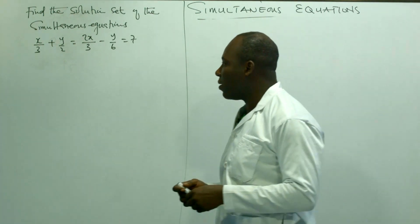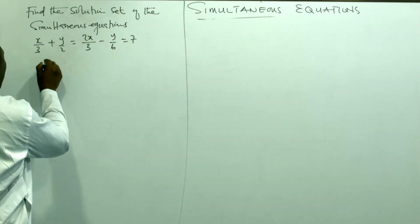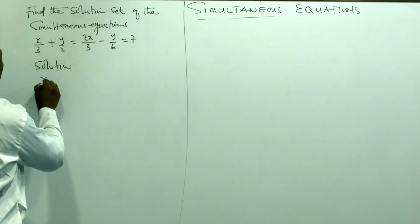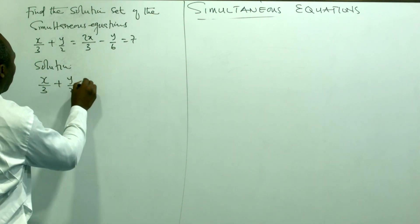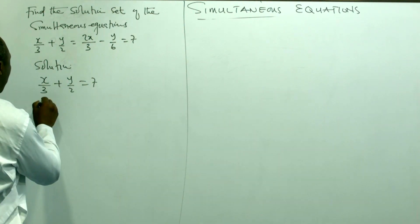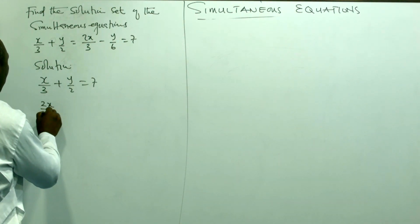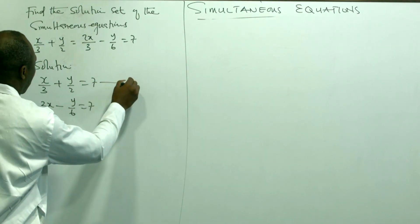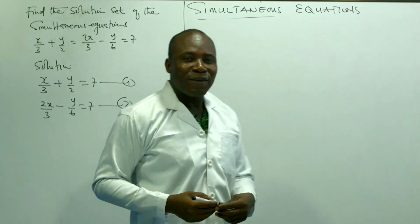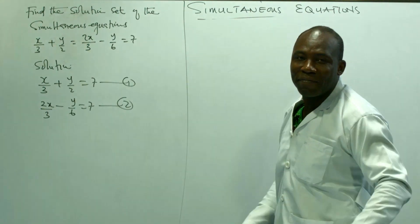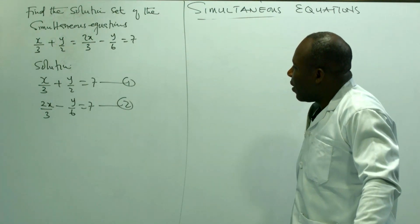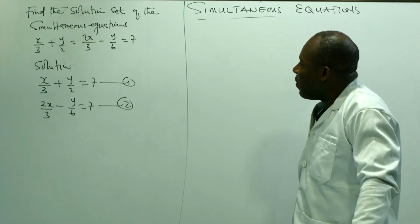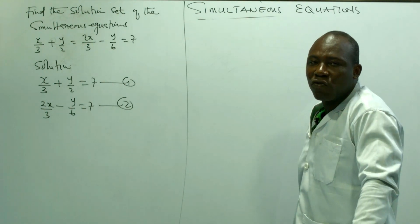So we are going to write them one by one. In equation 1, we have the denominators being 3 and 2.